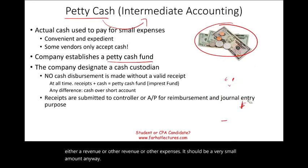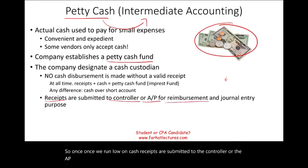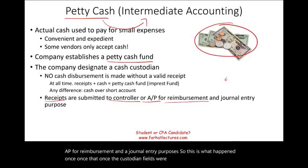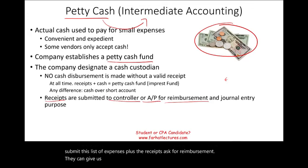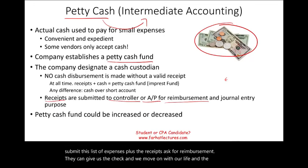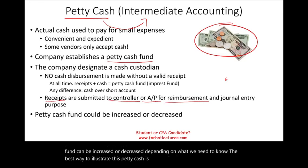Once the petty cash fund runs low, the receipts are submitted to the controller or accounts payable for reimbursement and journal entry purposes. Once the custodian is down to, say, $50, it's time to submit the list of expenses plus the receipts and ask for reimbursement — they issue a check and the fund is replenished. The petty cash fund can also be increased or decreased depending on the company's needs.